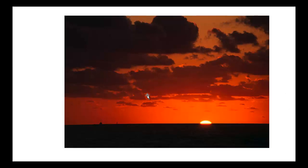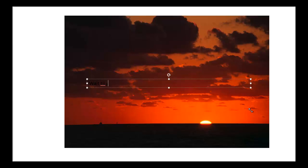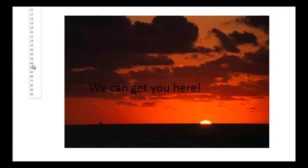Now we have to take a text box — it's a small box with a blue A in it. Once you click on that, you can expand it over your image. Now we can type something in there. Let's say 'we can get you here.' That's our slogan. We need to increase the size of that. As you scroll down underneath the fonts and the font size, you can see it changes. Now it's getting lost in the clouds.